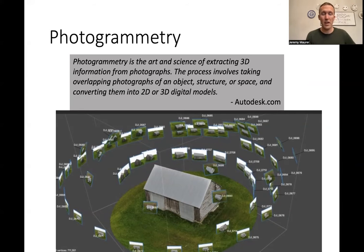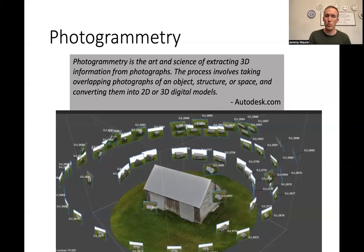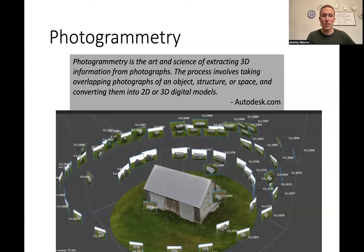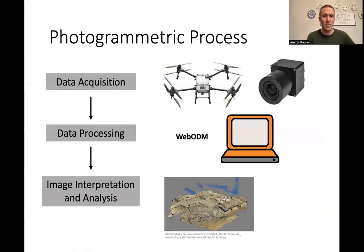That includes 3D point clouds as well as 3D models. We'll also be able to produce orthomosaics, which are two-dimensional images that are both geo-referenced and orthographic. We'll talk about what all that means as we go along.